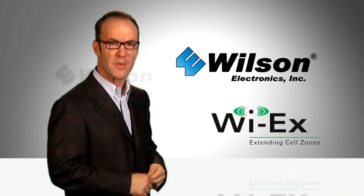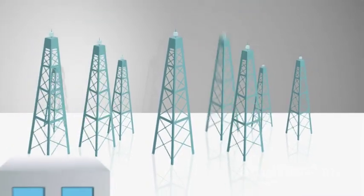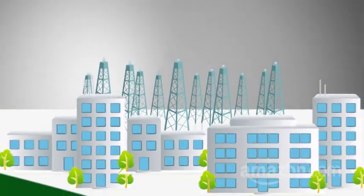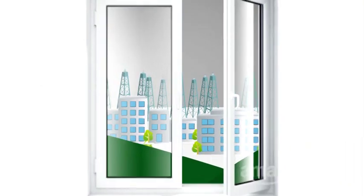Companies like Wilson Electronics and YX make these. Remember, there are over 175,000 cell towers in the U.S., but buildings, hills, walls, and even lead paint can weaken their signal. A cellular repeater can strengthen it and save your family.